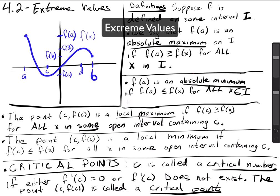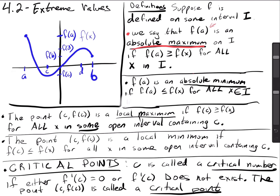Let's go through these one by one. We have right here the absolute maximum. The first thing to notice is f of a — what does that represent? When you're looking at a function, that represents the y of a, so the value of the function. The value of the function f of a is an absolute maximum.